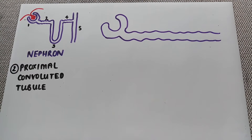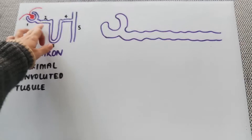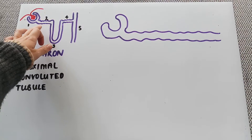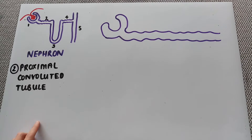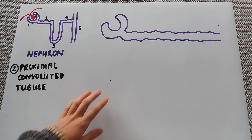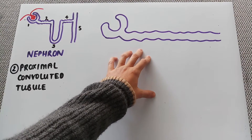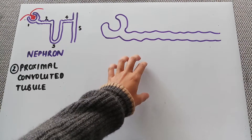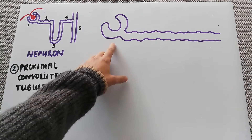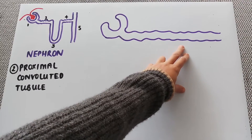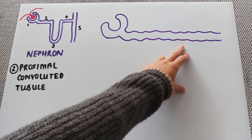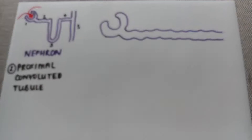Now we're going to have a look at the second part of the nephron. So that's this section here, following on from the Bowman's capsule, which is the proximal convoluted tubule. Here I've now drawn it in a bit more simple form. This is the Bowman's capsule, and this long wiggly section here is the proximal convoluted tubule.